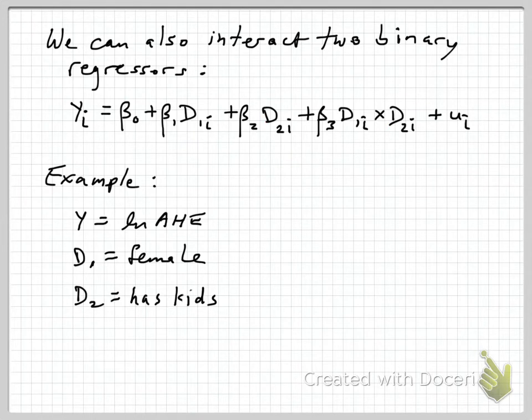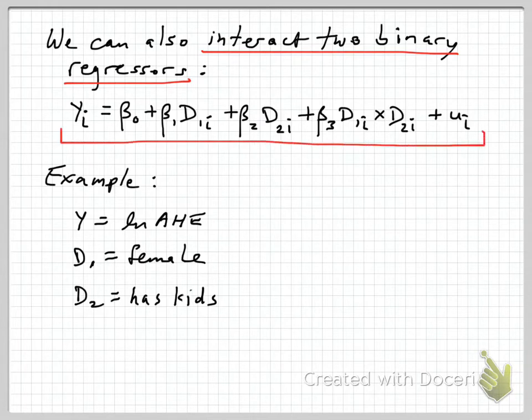We can also look at other kinds of interactions. In that case, we interacted a binary variable female with a continuous variable, years of schooling. Let's look at interacting two binary regressors, which can also be quite useful in certain applications. Here would be the model where we've got two dummy variables or binary variables, D1 and D2, and then we have this interaction term, which is the product of D1 and D2.